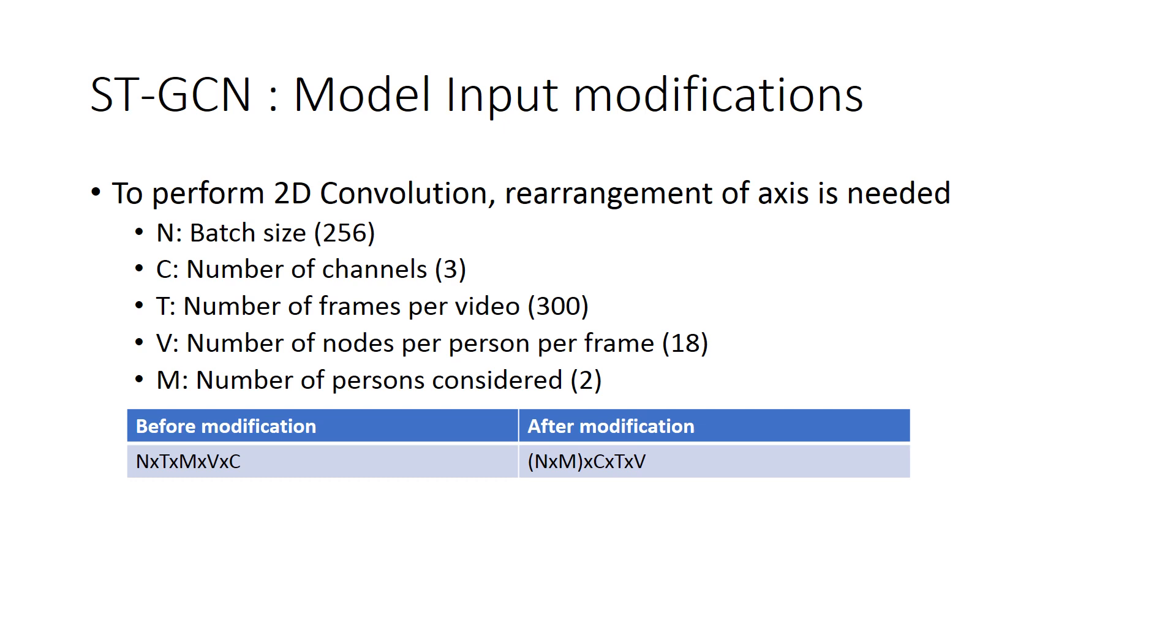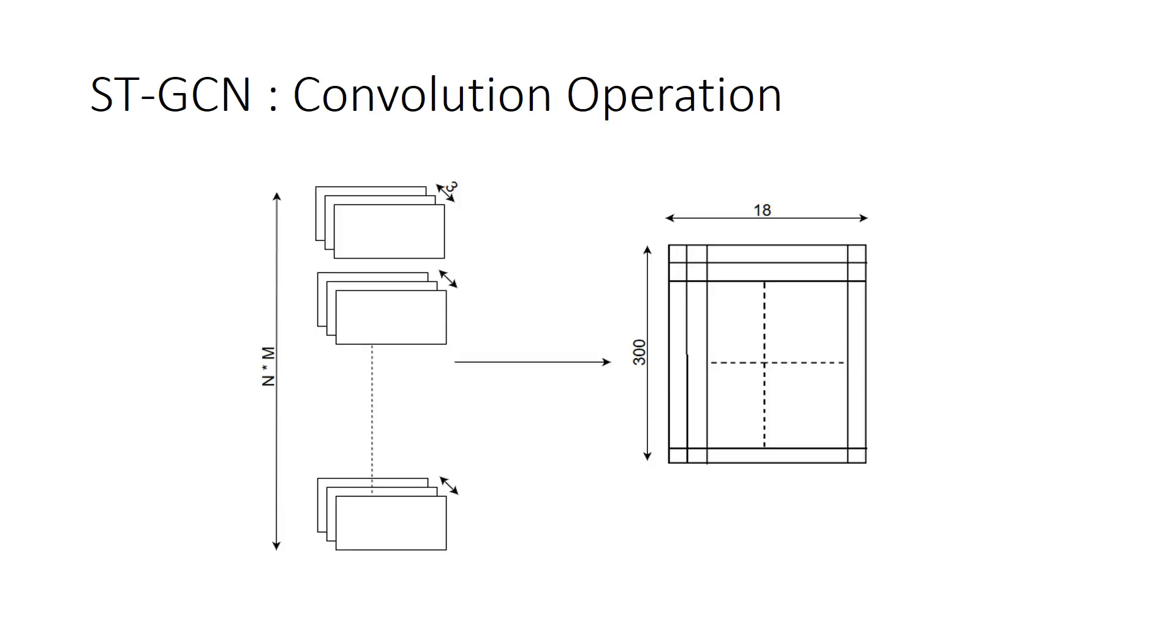The dimensions N*M*V*C is modified into N*M by C*T*V where N by M is the new batch size. Each element N by M consists of three channels which is X, Y, C and considering one channel from it, we will be getting one 300 by 18 matrix where 300 corresponds to 300 frames and 18 corresponds to 18 nodes in each frame.